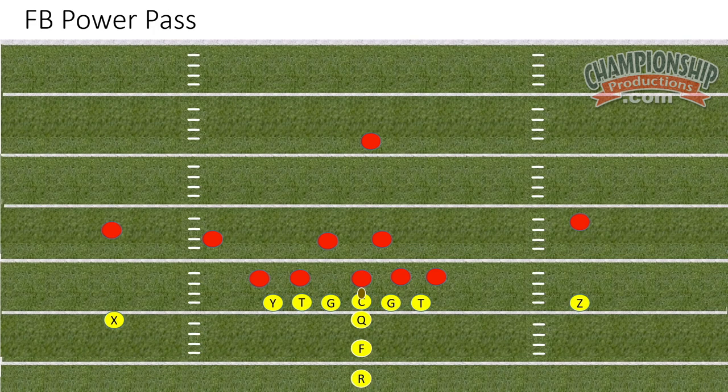Let's take a look at some basic complementary pass routes that we can run off of our power play action. These are basic routes that you can implement into your system, certainly not comprehensive. We have several videos in our library of short, intermediate, and vertical pass routes that can certainly be implemented off of the power run game. In this tutorial, we are simply going to show basic, rudimentary pass routes to take advantage of reacting defenses.